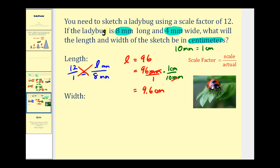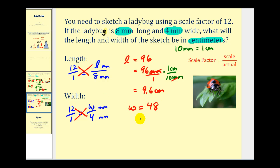Let's do the same for the width. The only difference is that instead of eight millimeters, we have four millimeters. So twelve over one must equal the width W over four — both in millimeters. Cross products: W times one must equal twelve times four, which is forty-eight. So we have forty-eight millimeters. Multiply by one centimeter over ten millimeters to do the conversion. The millimeters simplify out, and forty-eight divided by ten gives us a scaled width of four point eight centimeters.